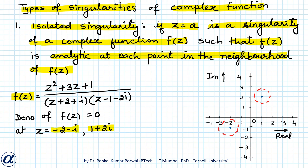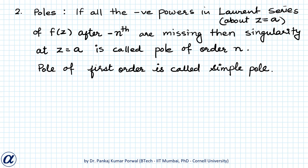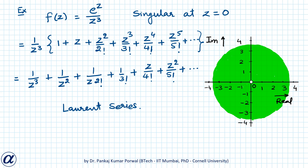The second type of singularity of a complex function is called a pole. If all the negative powers in the Laurent series of f(z) about z equals a after the minus n-th power are missing, then the singularity at z equals a is called a pole of order n. If n equals 1, the pole of first order is called a simple pole.